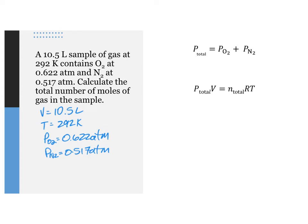For the total pressure, we get P total equals the partial pressure of oxygen plus the partial pressure of nitrogen equals 0.622 atm plus 0.517 atm equals 1.139 atm.